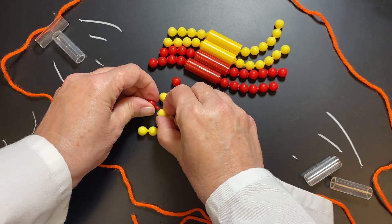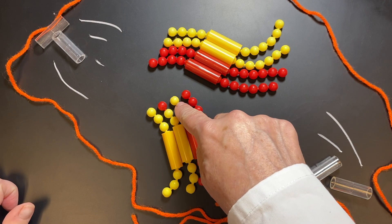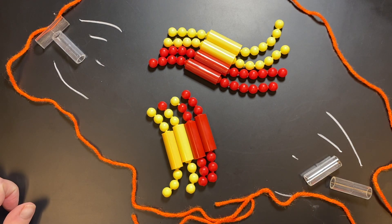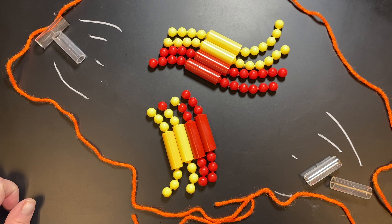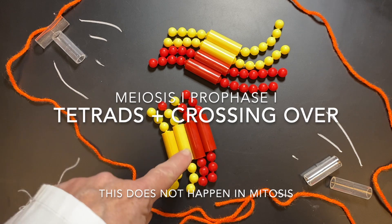So again, the two interesting things that happen during meiosis prophase one is tetrads form and crossing over happens, and you can see that I've done it here for you.